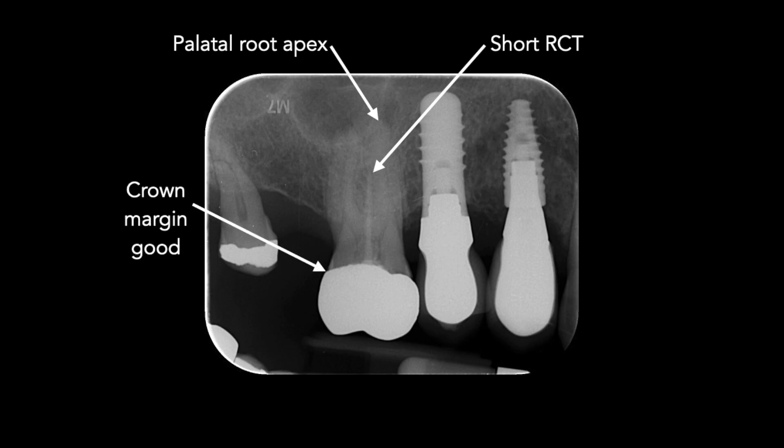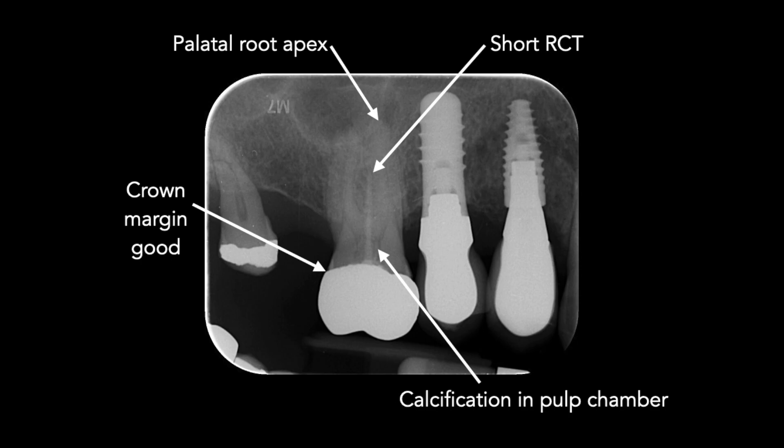The tooth has been restored with a full gold crown and in fact the crown is quite good and the margins look reasonable, so we won't need to remove this during root canal re-treatment. However, look closely at the pulp chamber and you can see calcification — this may be the reason why the canals were not located. We'll need to remove this material in order to gain access to the floor of the pulp chamber and locate those orifices.